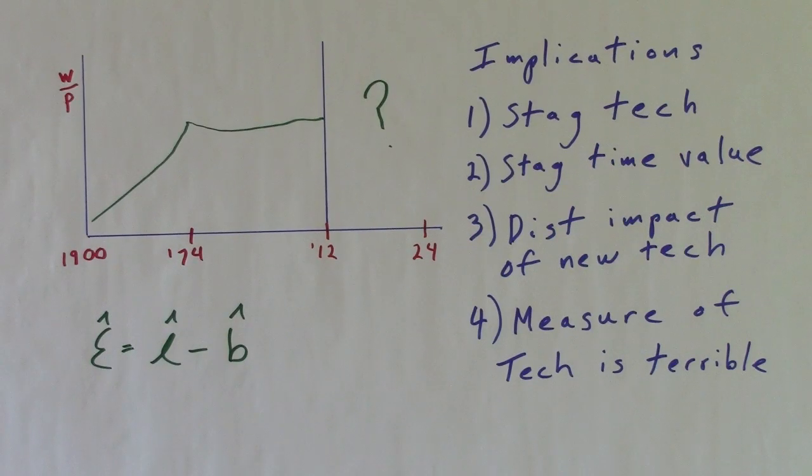We all know the official American real-wage data. It exploded over the first three quarters of the 20th century, and then it froze in 1974. The major absurd implications from the standard model are stagnation in technology and the value of time. Thirdly, the distributional effects of new technology cause this extreme situation for income inequality.